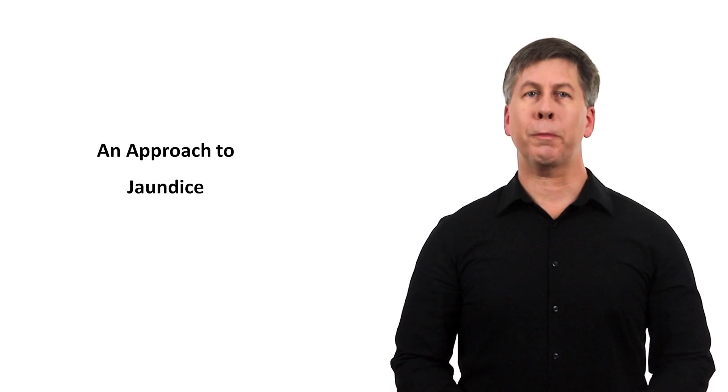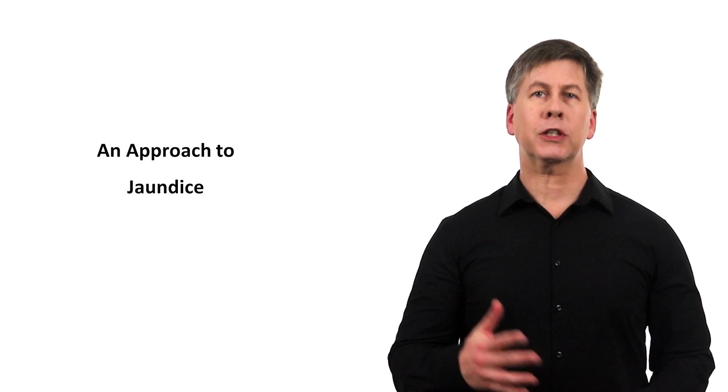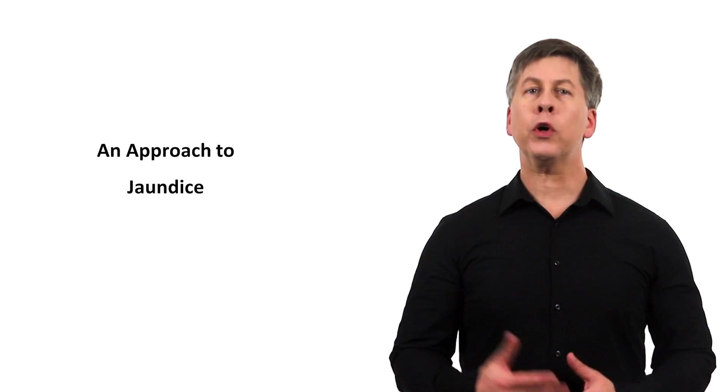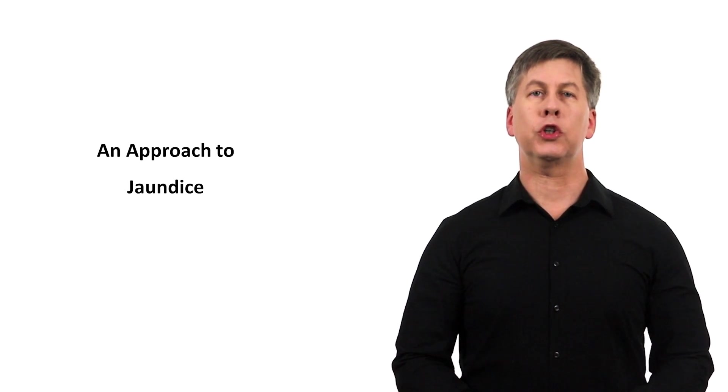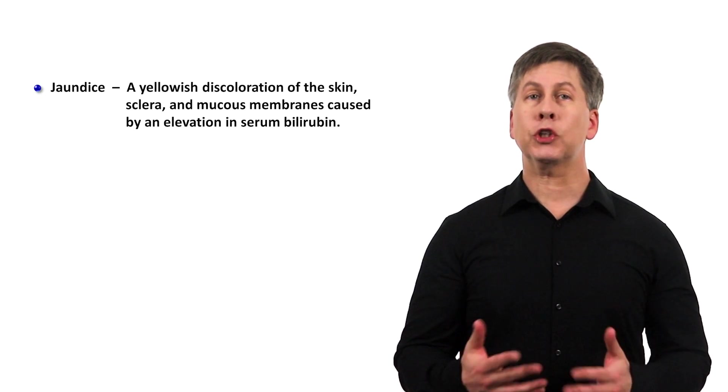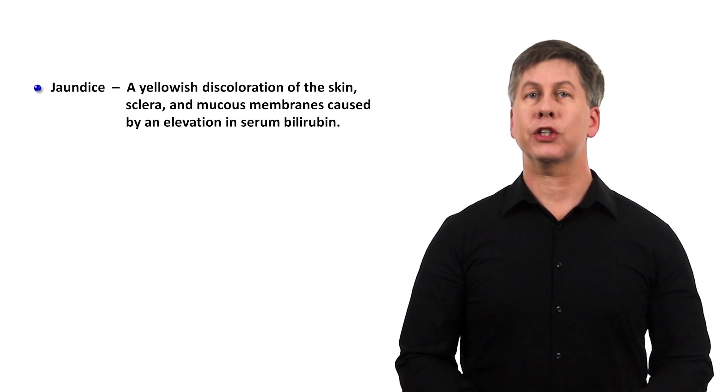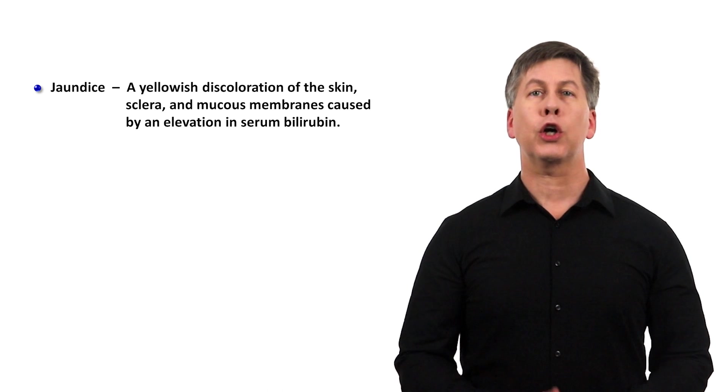Hello, it's Eric from Strong Medicine, and today I'm discussing jaundice. The word jaundice comes from the French word jaune, which means yellow. Jaundice is a yellowish discoloration of the skin, sclera, and mucous membranes caused by an elevation in serum bilirubin, a yellow-orange bile pigment.